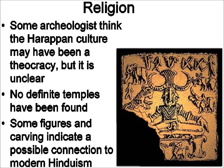Some archaeologists speculate that Harappan culture may have been a theocracy, ruled by religion, as we learned with the Egyptians in the last section. But without translating their writing, and with no definite temples being found, it's really hard to justify this speculation. Some figures and carvings indicate a possible connection to modern day Hinduism, but again, it's very difficult to know for sure. One hypothesis is that the early Harappan religion was intermingled with a different group that had invaded — it didn't happen very often, but India did get invaded — and that these two groups combined belief systems to create Hinduism. It's very difficult to tell for sure without translating the writing.